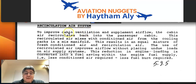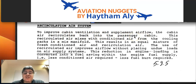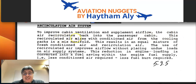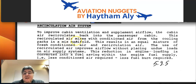The cabin air is recirculated back into the passenger cabin — it is filtered and then goes to the mixing chamber, where it mixes with air from the air conditioning packs, and then goes back to the cabin zones. We will probably have three cabin zones: flight deck zone, forward cabin zone, and aft cabin zone. This recirculated air mixes with conditioned air from the cooling packs in the mixing chamber.